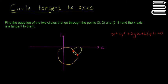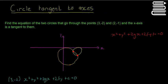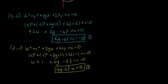The first thing I'm going to do is substitute the points (3, −2) and (2, −1) into all the x and y values — something we've seen before in our videos. I'll skip ahead to the answers to save time. After subbing in the point (3, −2) and (2, −1), you work through the algebra and get two equations in g, f, and c: equation 1 is 6g − 4f + c = −13, and equation 2 is 4g − 2f + c = −5.